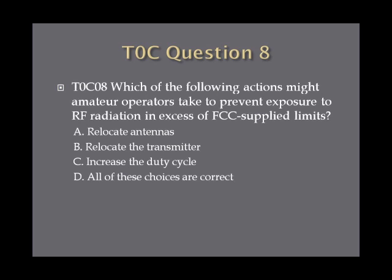Question eight. Which of the following actions might amateur operators take to prevent exposure to RF radiation in excess of FCC supplied limits? A, relocate antennas. B, relocate the transmitter. C, increase the duty cycle. Or D, all of these choices are correct?